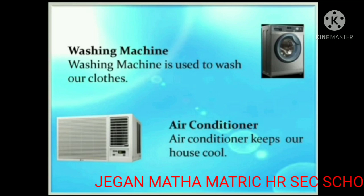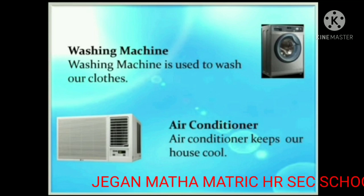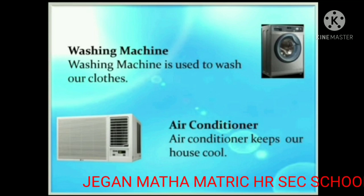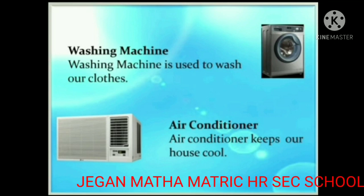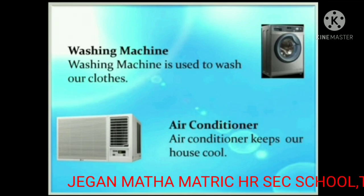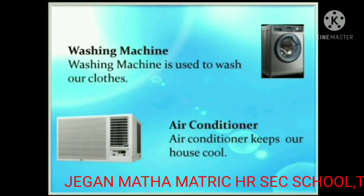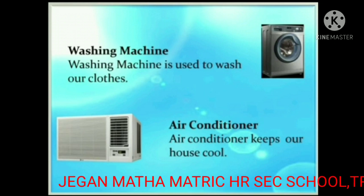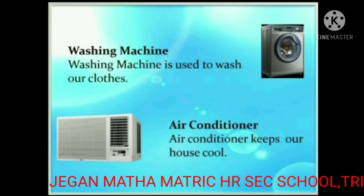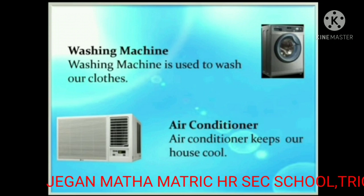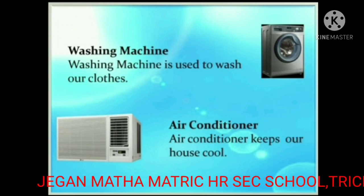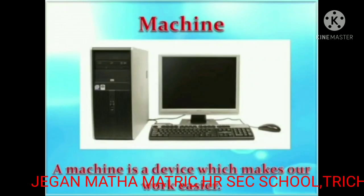What are they? Washing machine is used to wash our clothes. The next one: air conditioner. Air conditioner keeps our house cool. Once again, what are they? Washing machine and air conditioner.